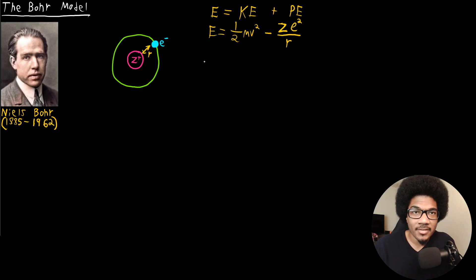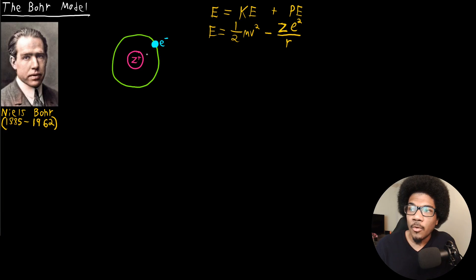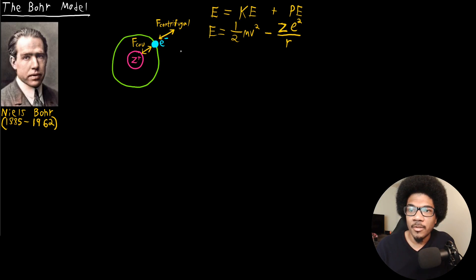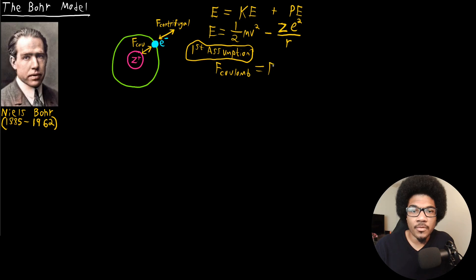The first assumption that Bohr makes is regarding the centrifugal force. What Bohr assumed is that the centrifugal force is actually going to be equal to the Coulombic force. The Coulombic attraction would normally lead to the electron death spiral, but by setting the centrifugal force exactly equal to the Coulombic force, he prevents that. This is the first assumption.